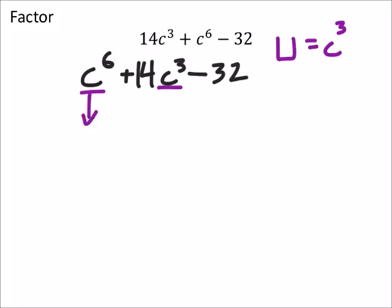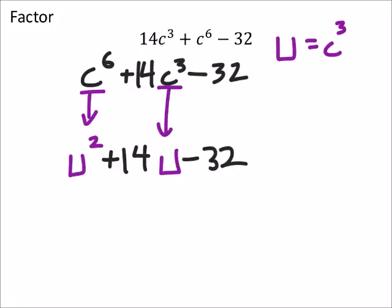And what that does is it changes this into u squared, because that would be c cubed squared, and this c cubed into just a u. So that's plus 14u minus 32. Now I'm just looking at 32 and looking for a way to split it up, a negative 32 I should say, so that I get positive 14.